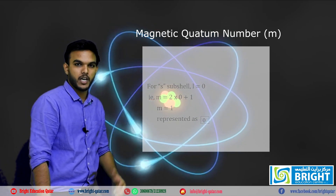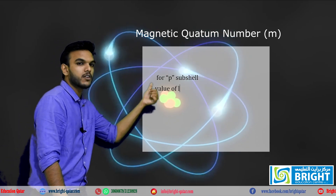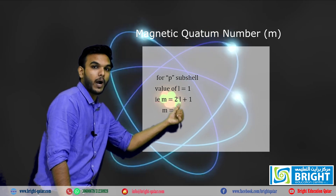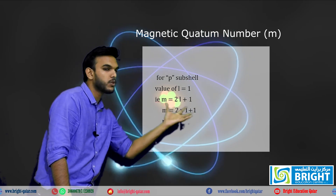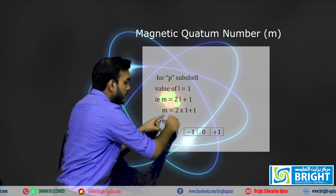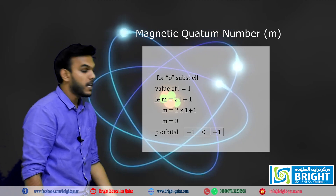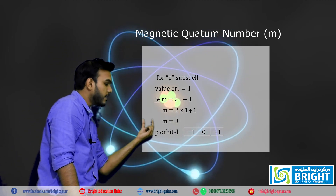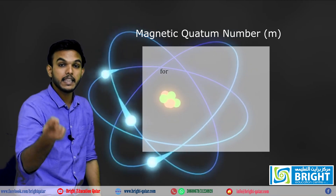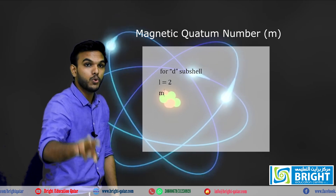In the case of the p subshell, l is equal to 1, so m equals 2 into 1 plus 1, which equals 3. The p subshell has three orbitals. For the d subshell, l is equal to 2, so m equals 2 into 2 plus 1, which equals 5.